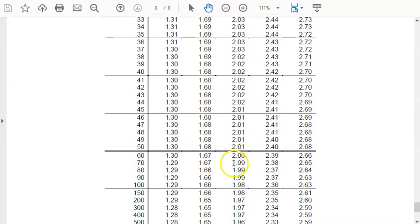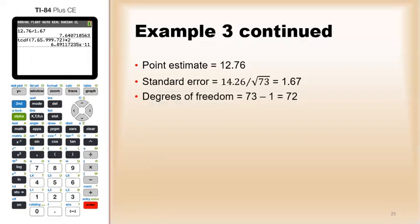So, I look here, it's 1.99 for 70 degrees, and 1.99 for 80 degrees. So, 1.99 for 72 degrees as well. So, the 95% confidence coefficient is 1.99.